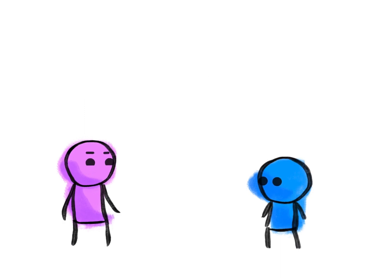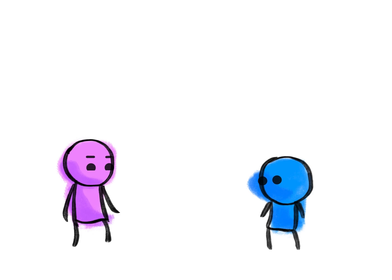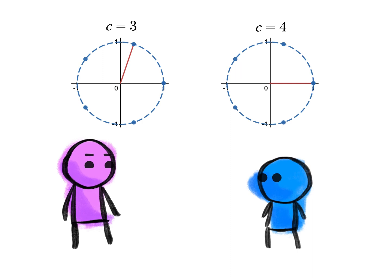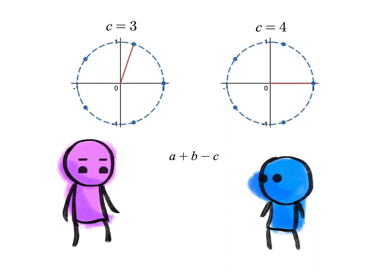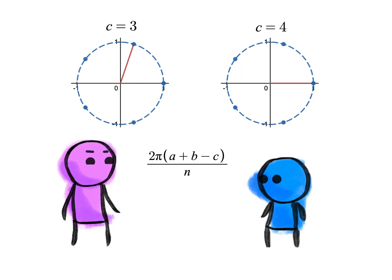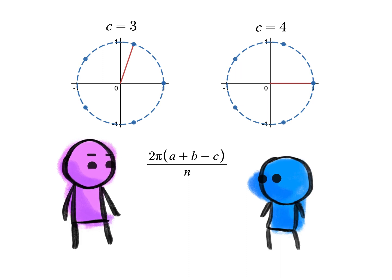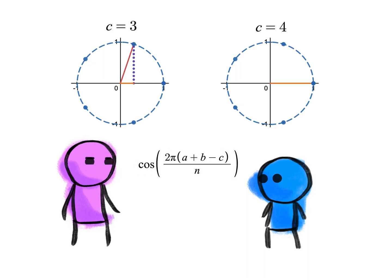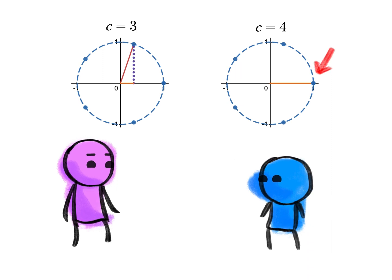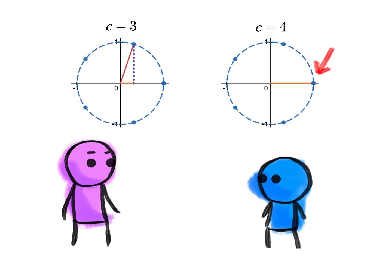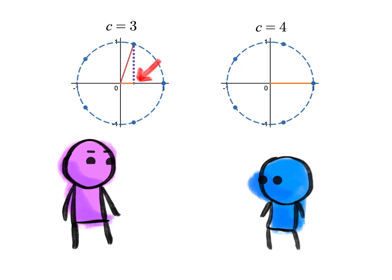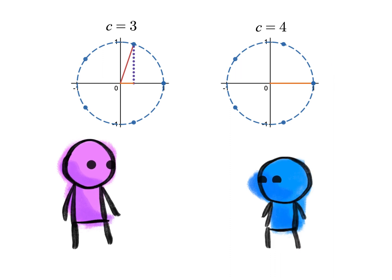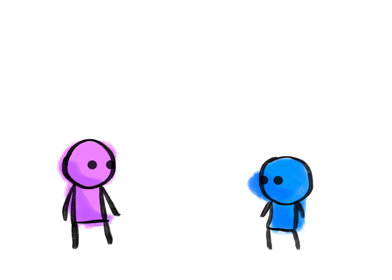And then to get the Cth logit, you rotate backwards by 2πc/n to get a rotation by (a+b-c) times 2π over n. And you look at what this does to the axis, you project this onto the axis of the circle. Yep. And this is 1 if you've done nothing, i.e. C equals a+b mod n, and it's less than 1 if you've done some rotation. So this is biggest at the correct answer. Yep. And that's the basis of this algorithm.